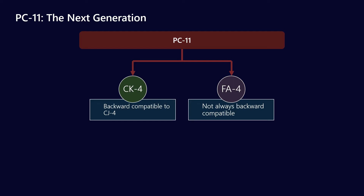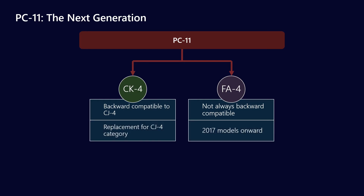With FA4 though, it's not always backward compatible, and that's something we really need to be aware of. Particularly if we have a fleet where all the different trucks or assets are of different ages — we might have some new trucks but some that are 10 to 20 years old. CK4 was a direct replacement for the CJ4 category, but FA4 is really only applicable to engines or engine blocks from 2017 onwards.